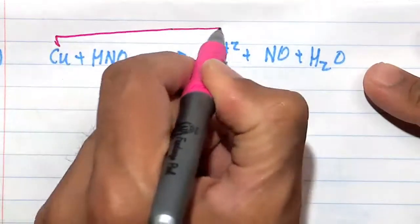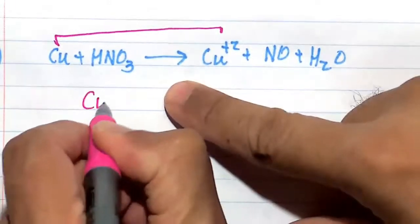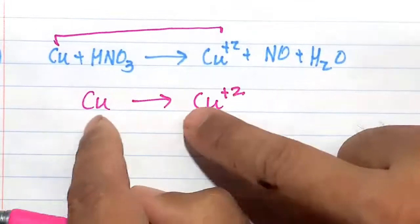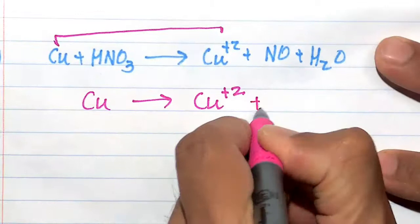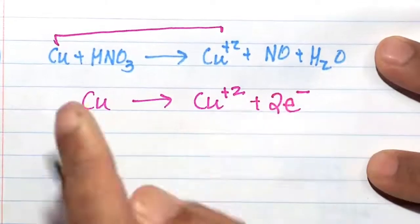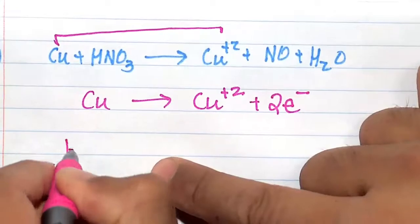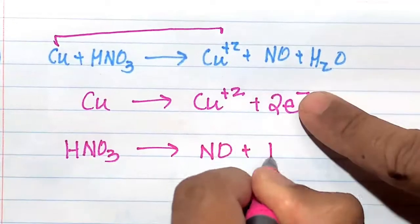So first thing here, the copper is going to go to copper²⁺. We will balance the charge because the copper atoms are balanced 1 to 1. So we'll balance the charge by adding 2e⁻ here. So +2 minus 2 is 0. And then we have HNO₃ going to NO plus H₂O.